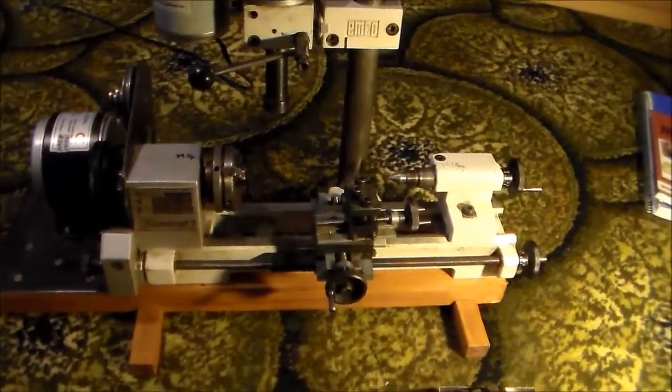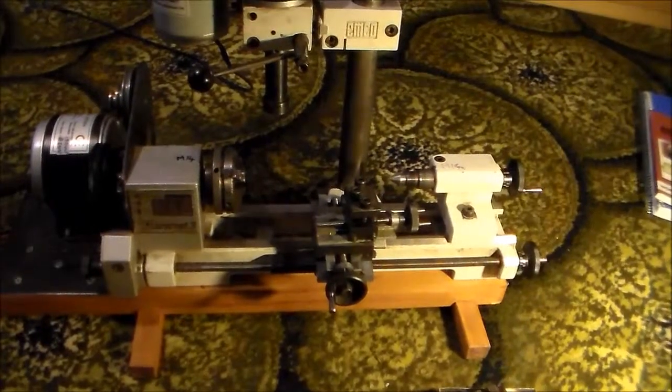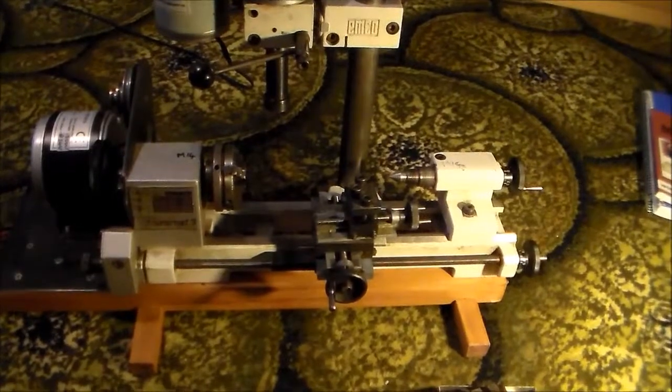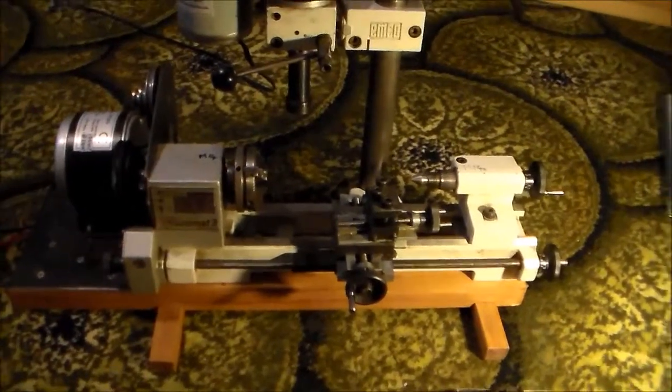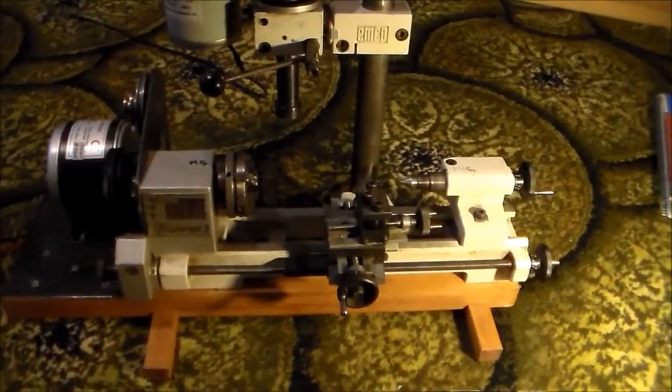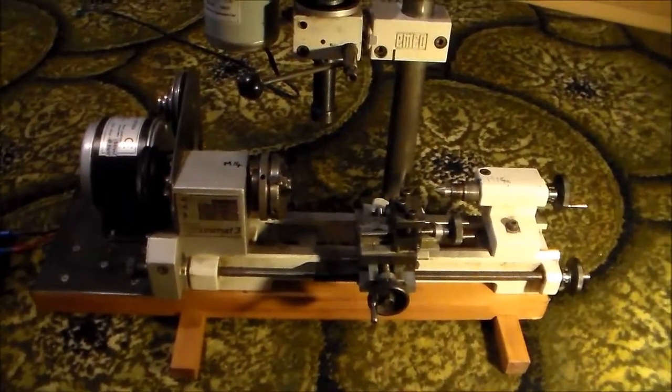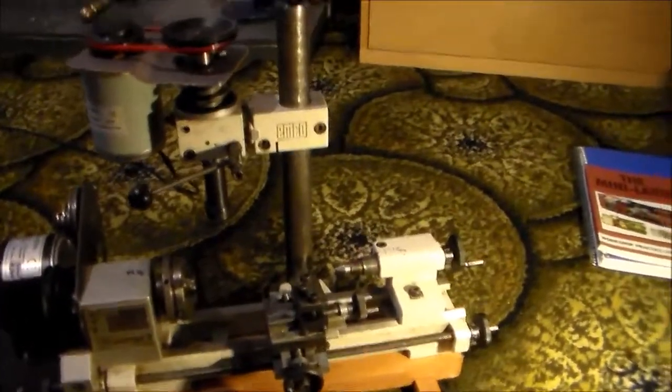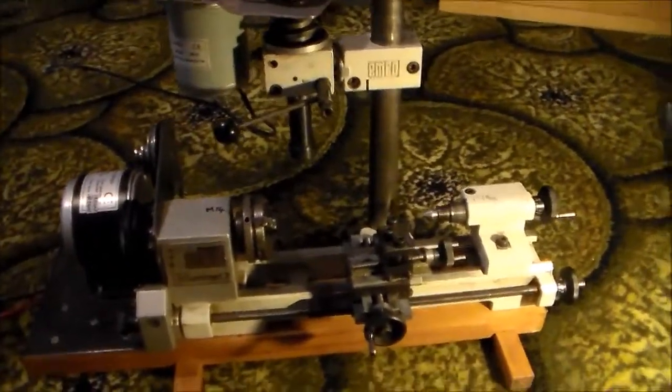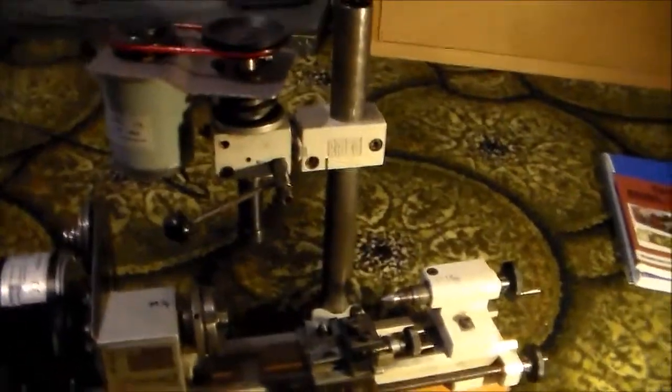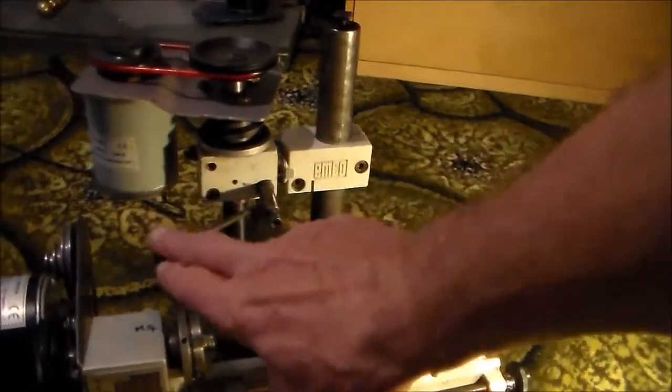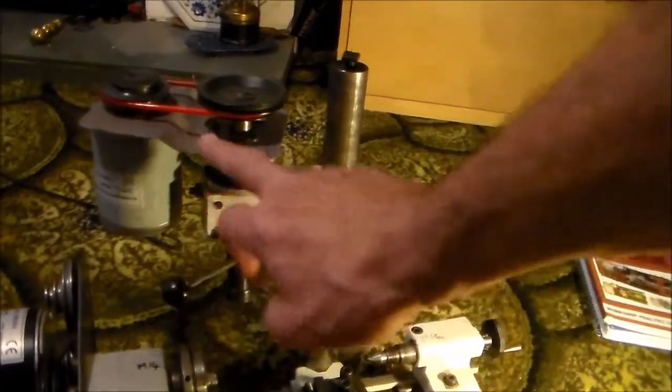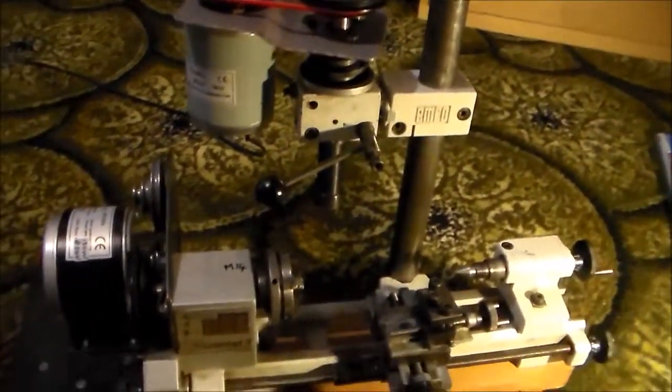It's similar in size to the Unimat SL lathe, which has got the round bars for the bed and where you actually remove the headstock and attach it to the column in order to get the drilling operation. At least with the Unimat 3 and 4, you do get a separate milling head on it, but you didn't originally get a separate motor.